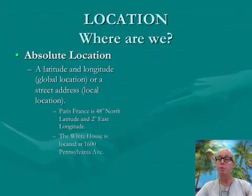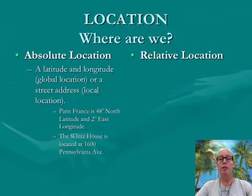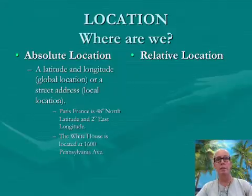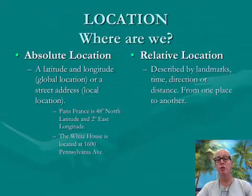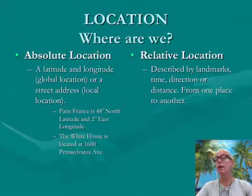The White House is specifically at the address 1600 Pennsylvania Avenue. The other way we can look at location is relative location, and relative by definition is someplace that's a little broader — it's about there. You could say to somebody, my house is near Calabasas High School. That is a relative location. It could be described by landmarks, time, direction, or distance from one place to another. For example, if you turn right at the gas station, you'll get to the street that I live on.